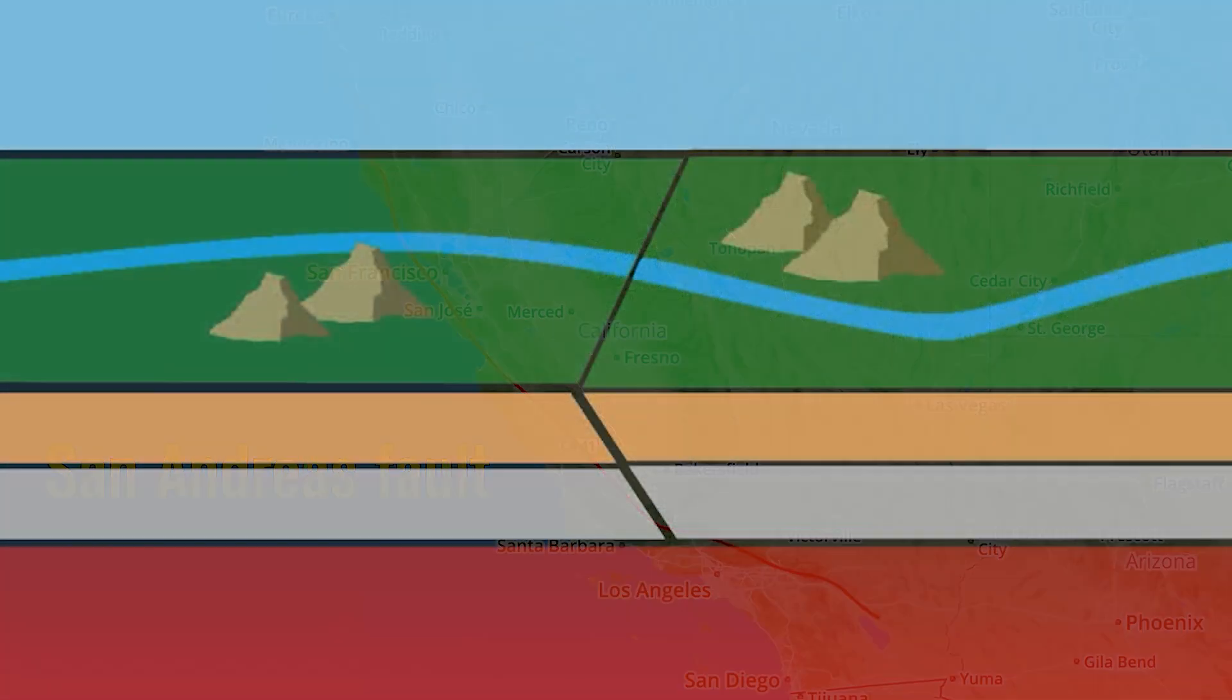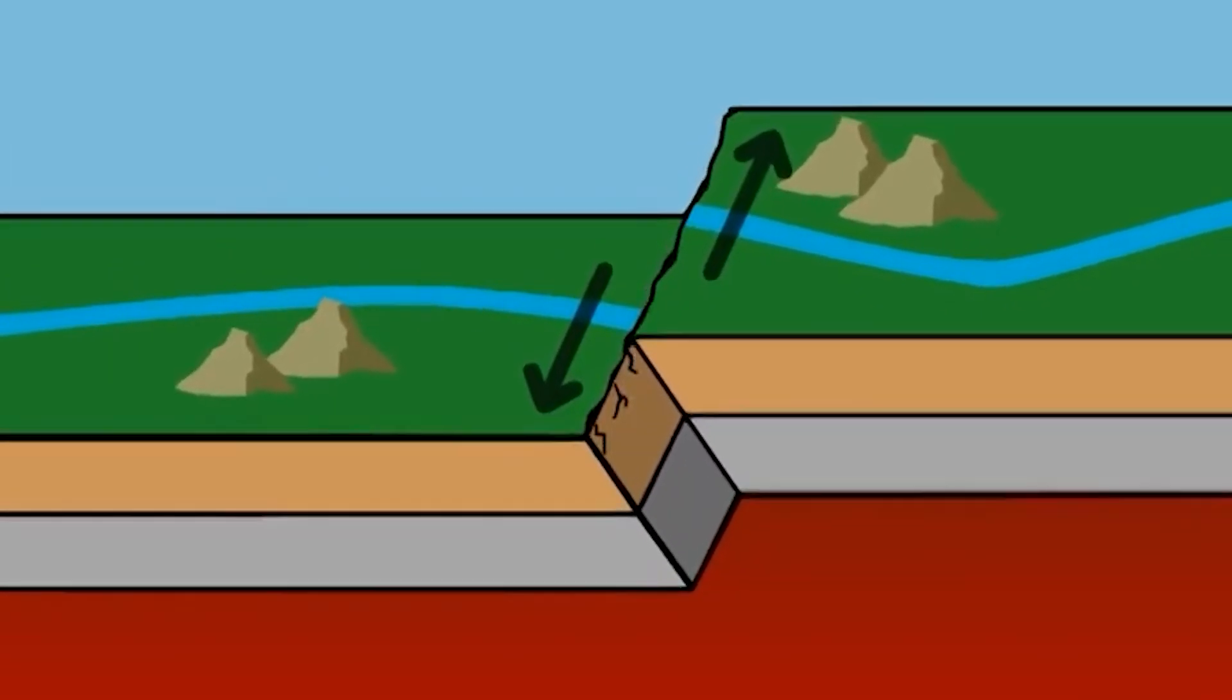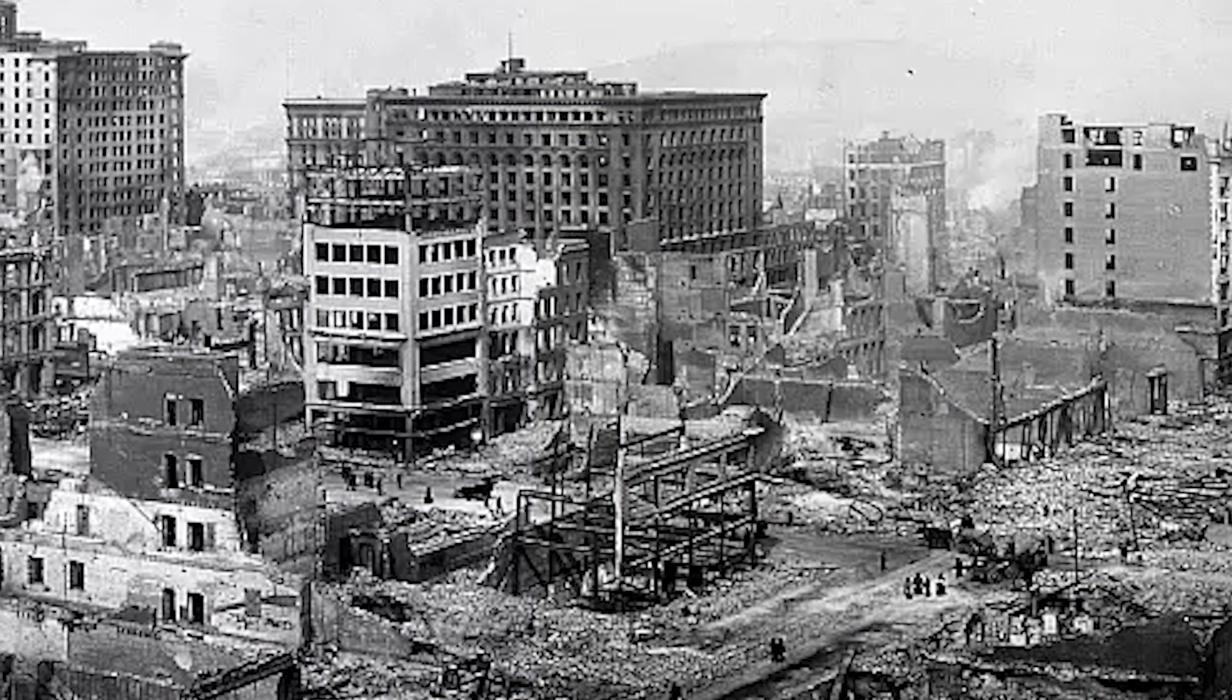As the plates move, stress builds up until, eventually, the pressure is released in the form of an earthquake. That's why California is such an earthquake hotspot. There's constant motion happening beneath the surface.